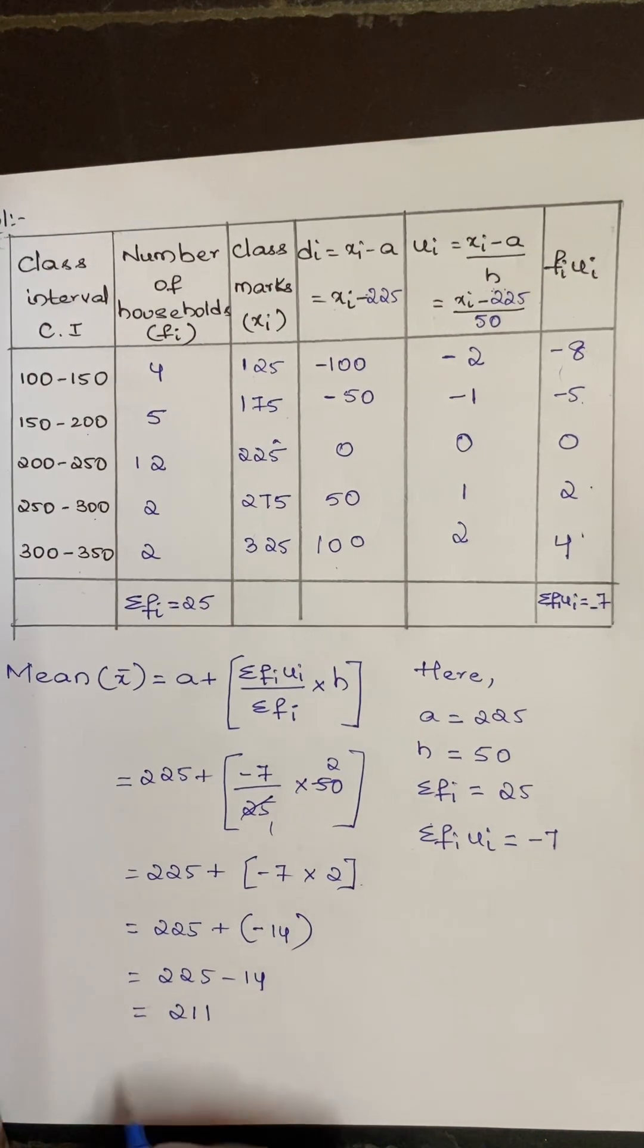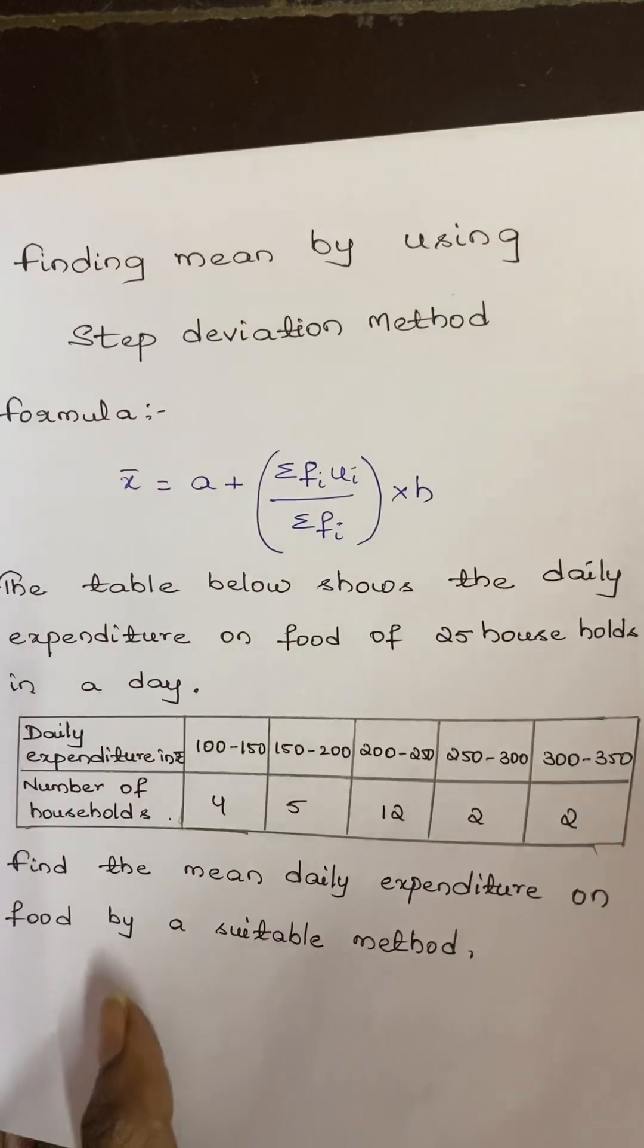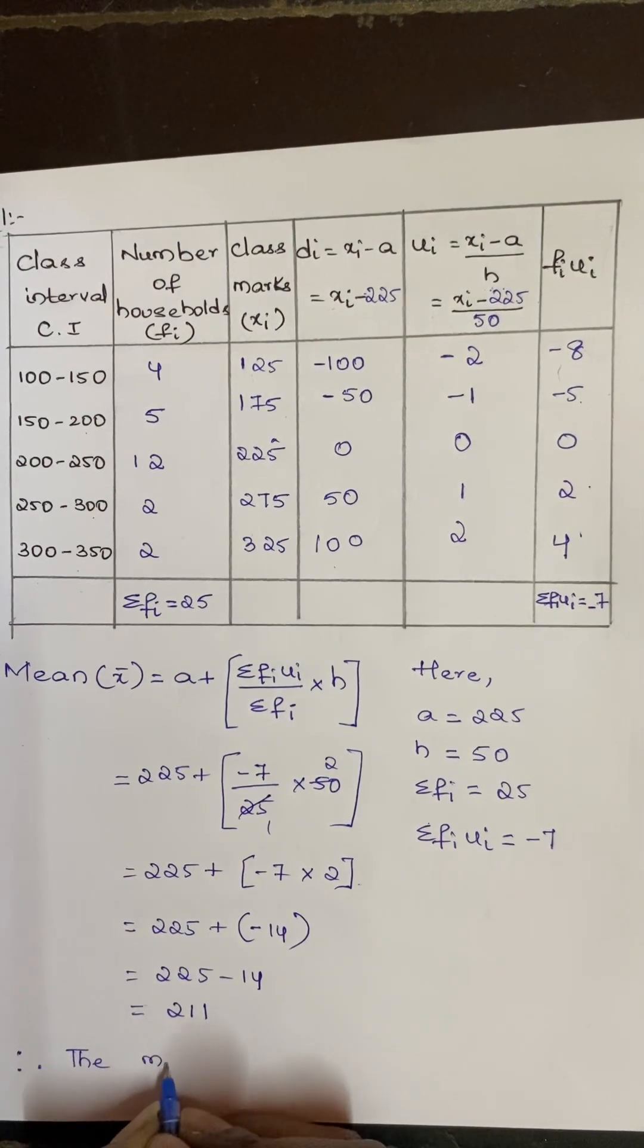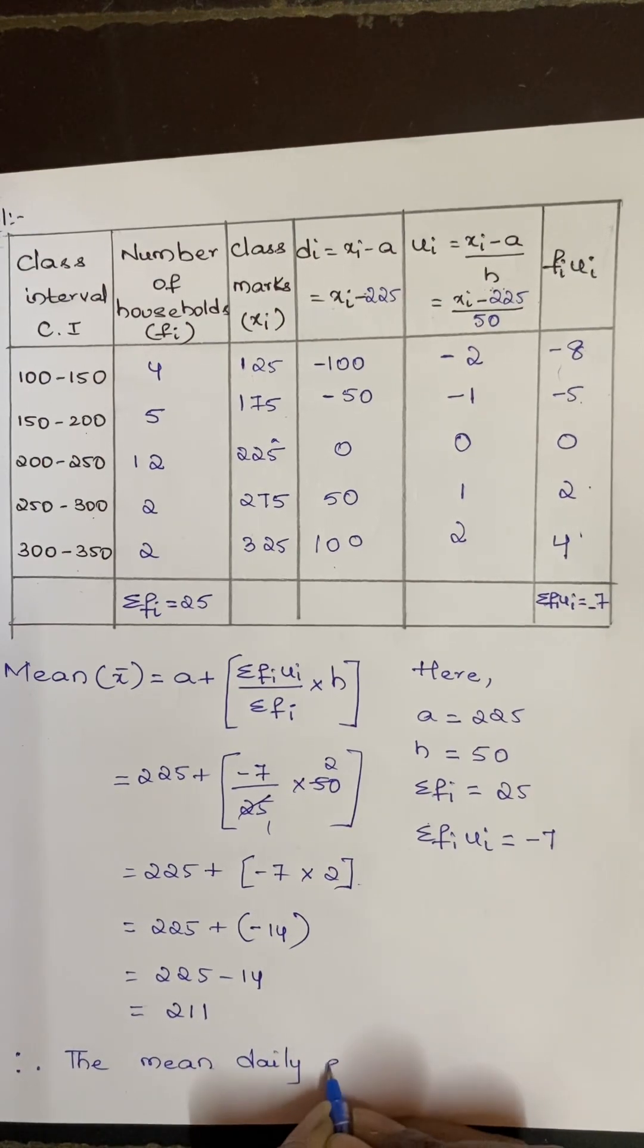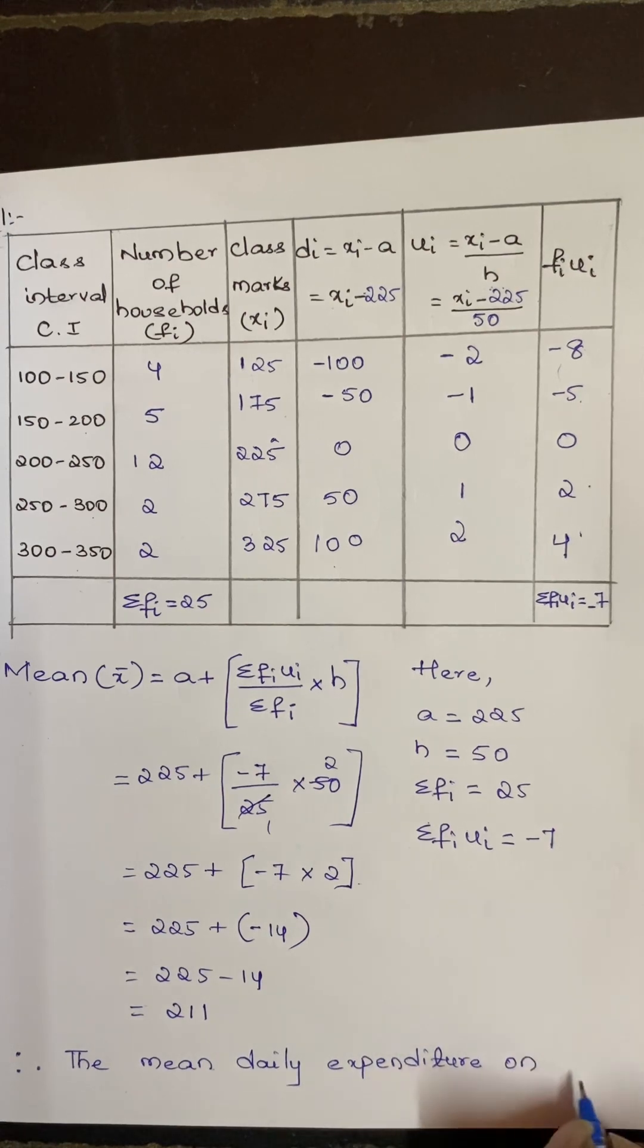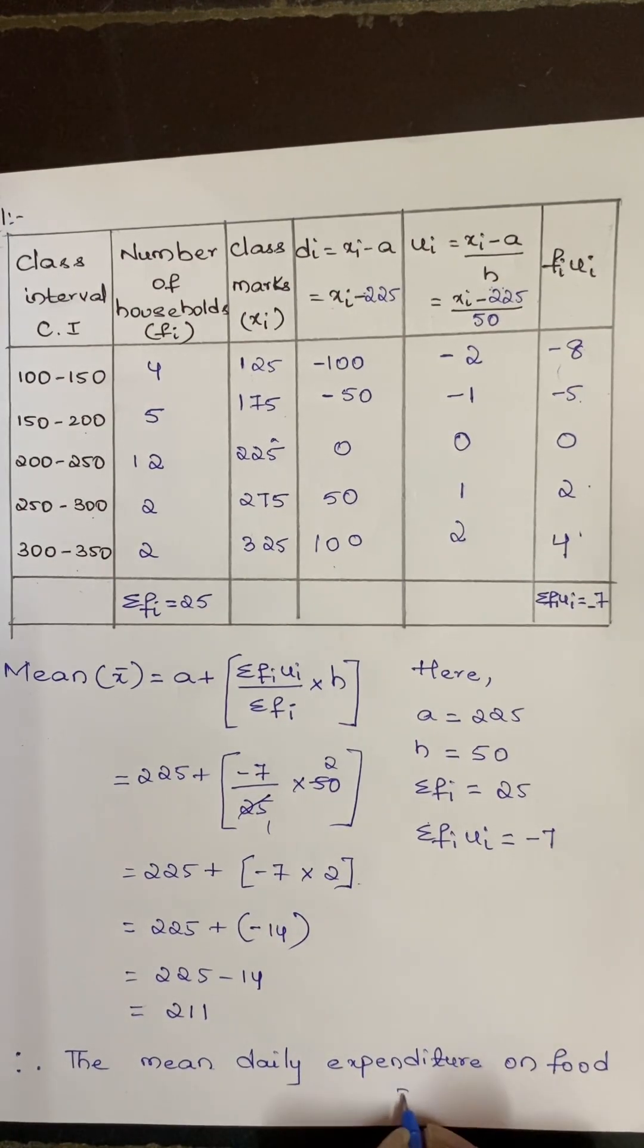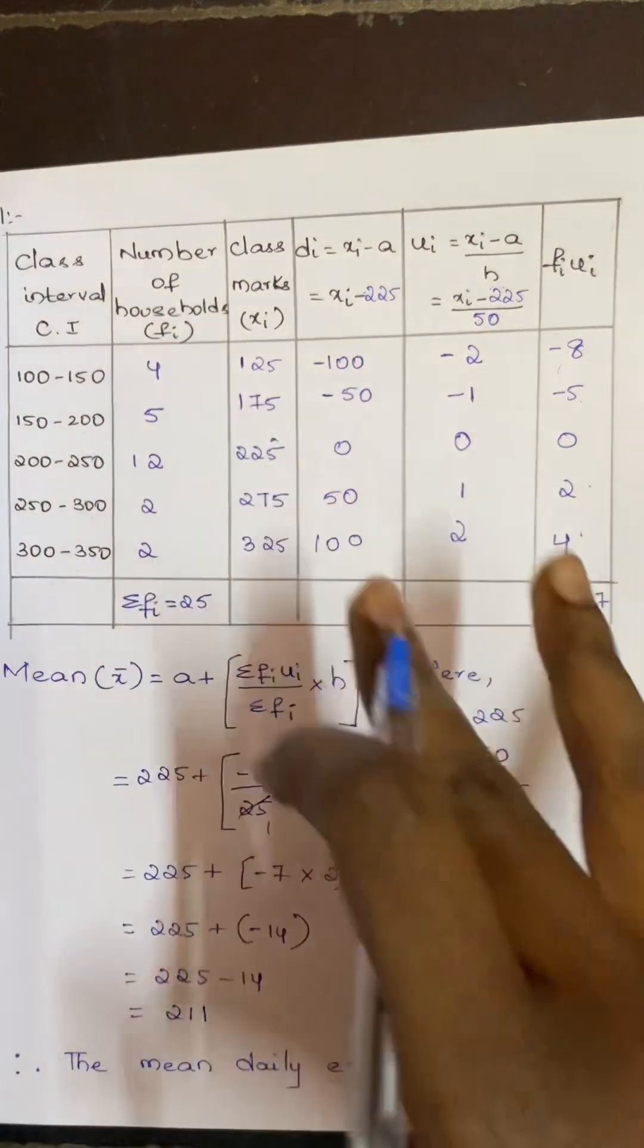So what is the question that they are asking? Find the mean daily expenditure of food. So the final answer is: the mean daily expenditure on food is equal to rupees 211. So this is how we have to find the mean by using step deviation method.